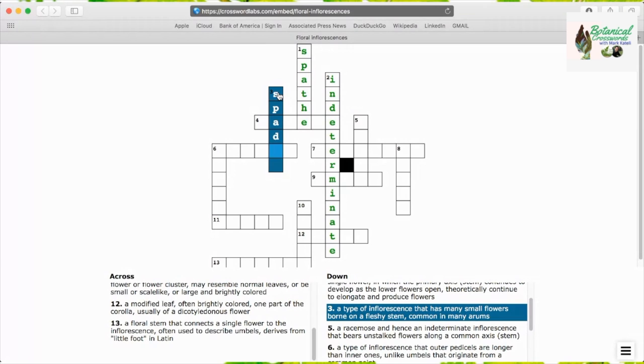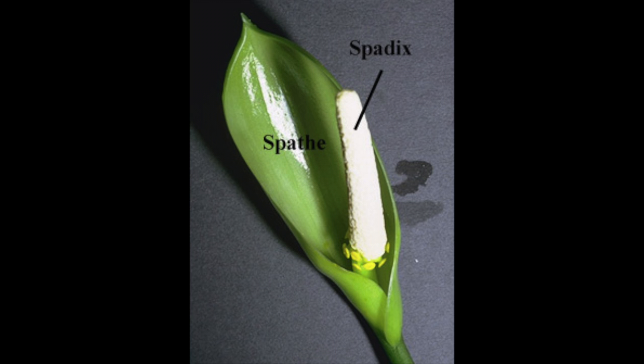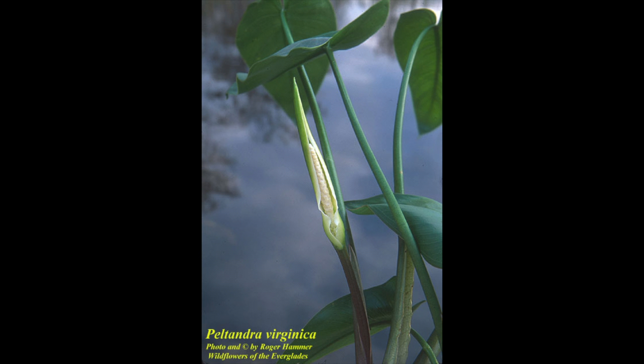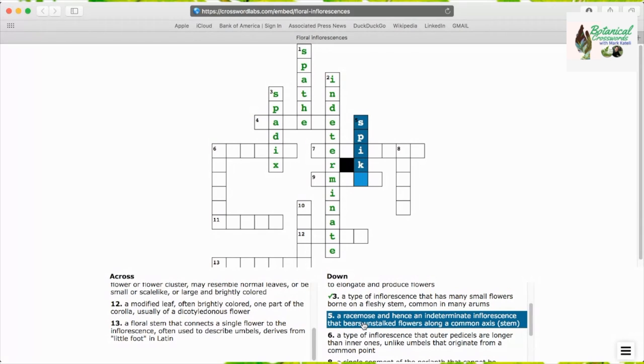Spadix is the next answer, a type of inflorescence that has many small flowers borne on a fleshy stem, common in many arums, such as this picture of Peltandra, another native.